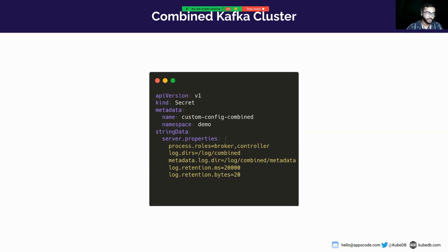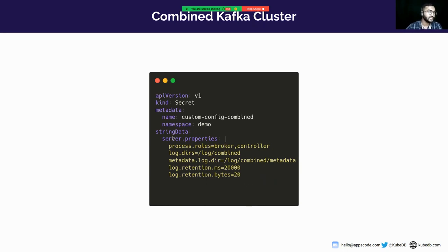The next configuration is log.directory. The default directory is /var/log/kafka. We also changed fields like log.retention.ms and log.retention.bytes. You can change or update any configuration by specifying all configurations in the server.properties file section.